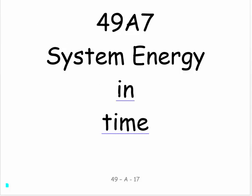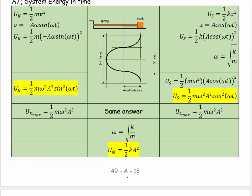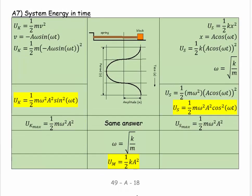Welcome. This is 49A7: System Energy in Time. We're going to look at the kinetic energy and the spring potential energy of the oscillator as time passes. We can calculate either the spring potential energy on the right-hand side or the kinetic energy on the left-hand side.